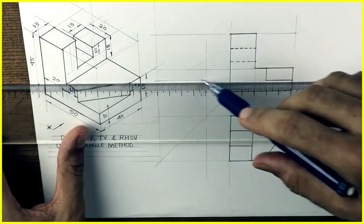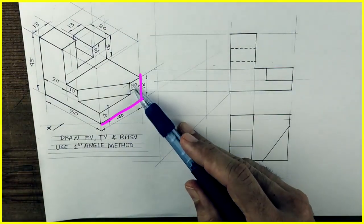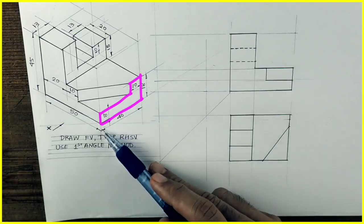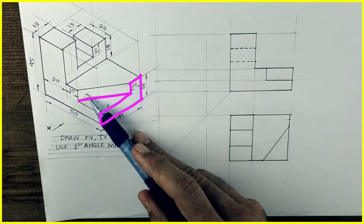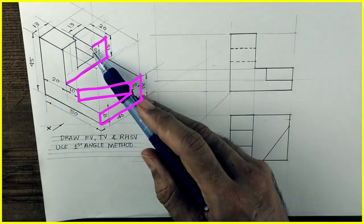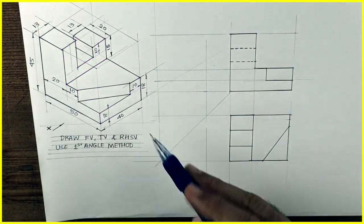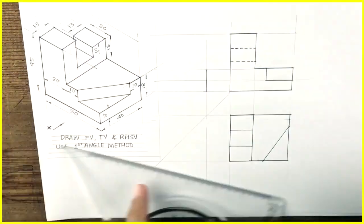Then we'll project from front view. Inside you'll see this L shape. See this. And rectangle. Then this part. See this. So we'll project one by one. First we'll draw that L shape.